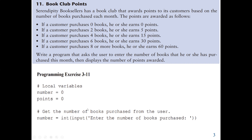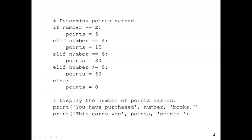Now we know the number of books the customer bought, and we write our conditions to determine points. If the customer buys two books — if number equals 2 — we assign 5 to the points variable. If they buy four books, we assign 15. If they buy six, we assign 30. If they buy eight or more, we assign 60. Else — if they buy one or zero, meaning less than two — the points remain zero. Then we display the results.